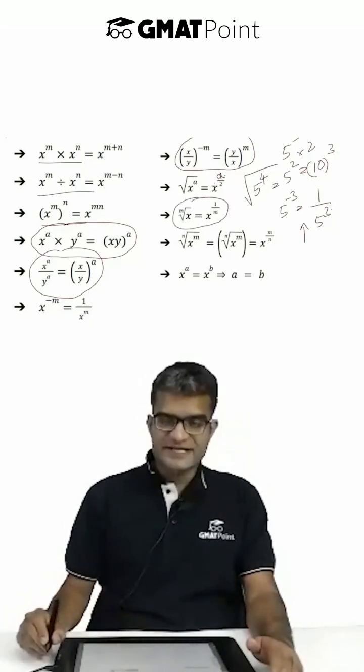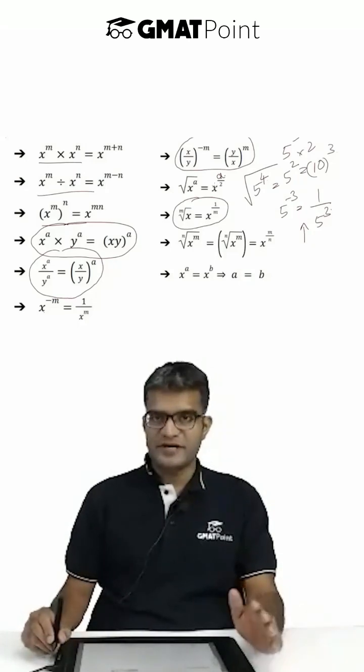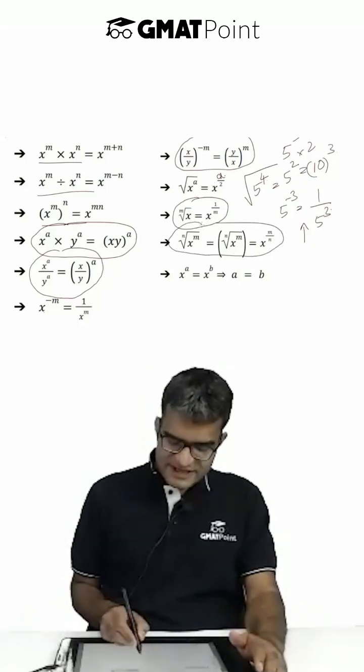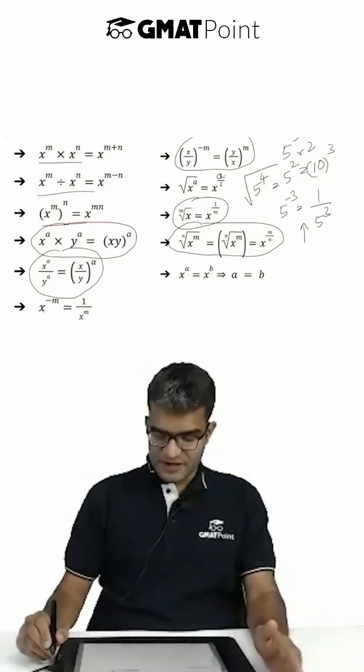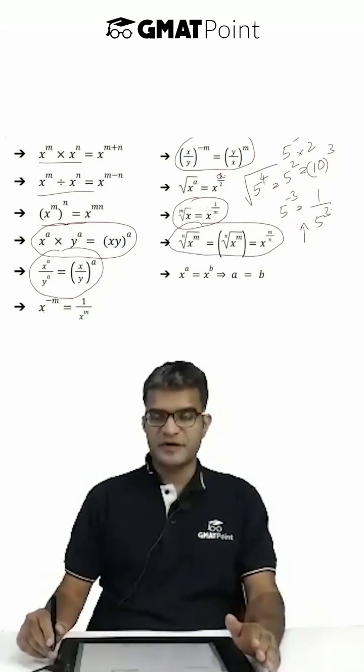The mth root of x can be represented as x to the power 1 by m. Similarly, the nth root of x to the power m equals x to the power m by n.